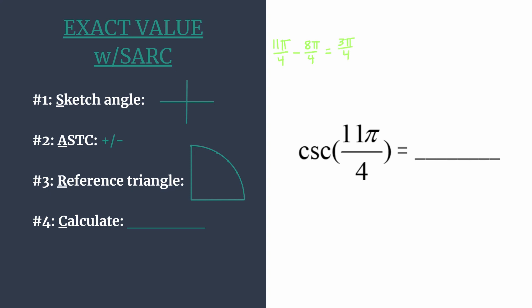So these angles are coterminal, 3π/4 and 11π/4. And all that means is they share the same terminal side. So we don't really care how we rotated to get there. When we're calculating exact values, we really just need to know where is that terminal side and which quadrant.